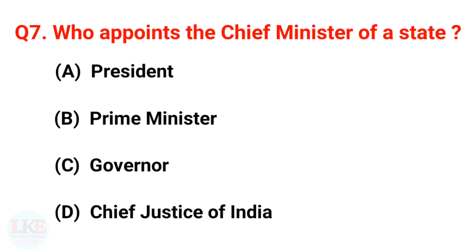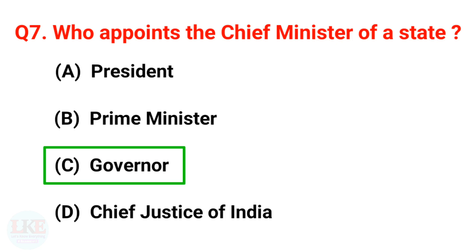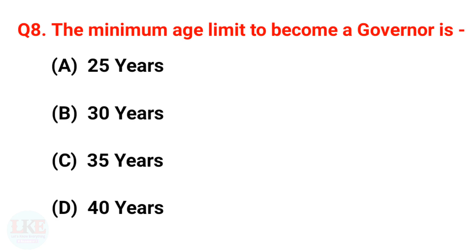Next question: Who appoints the Chief Minister of a state? Options: A) President, B) Prime Minister, C) Governor, D) Chief Justice of India. The right answer is option C, Governor. Yes, the Governor appoints the Chief Minister of a state.